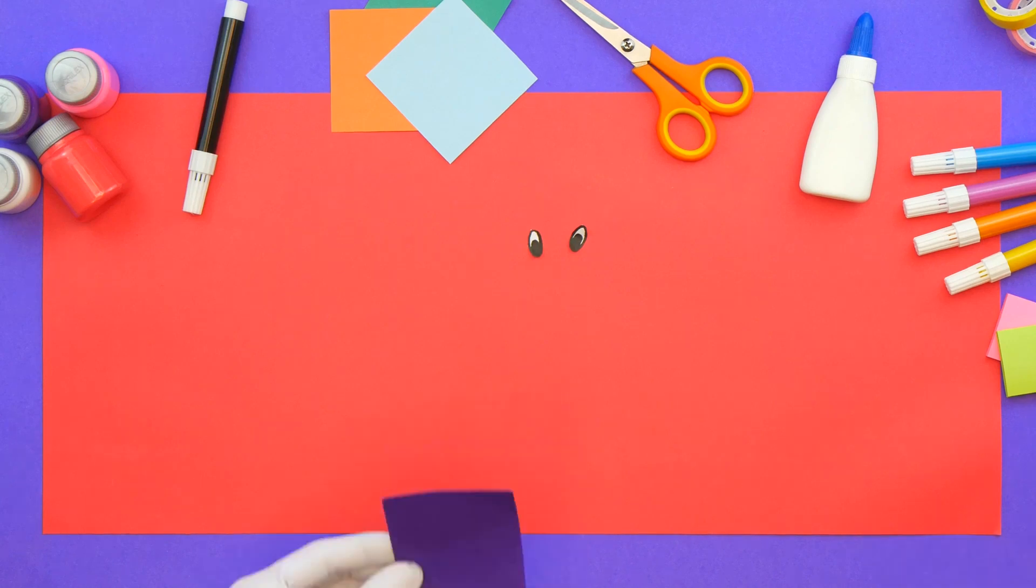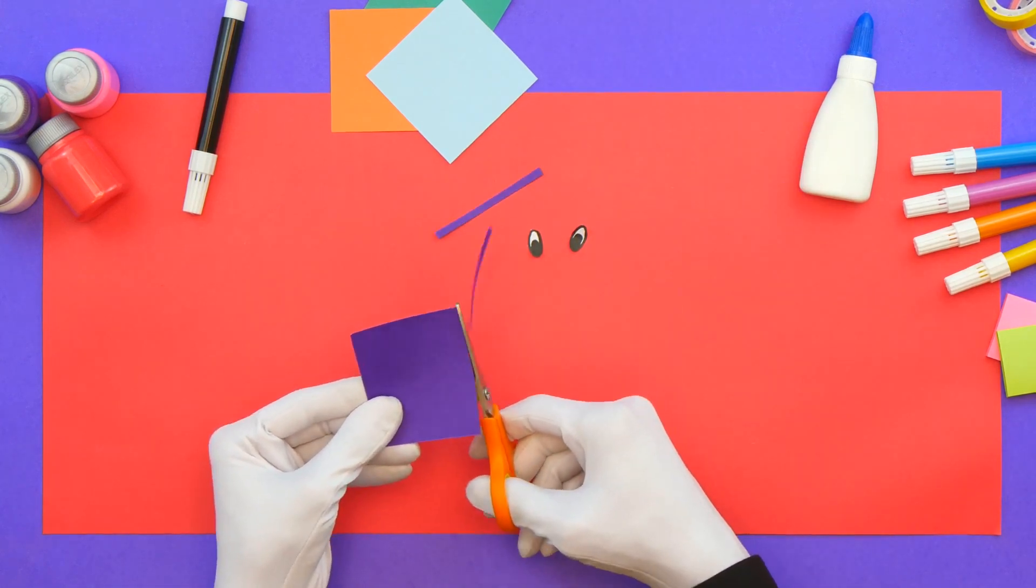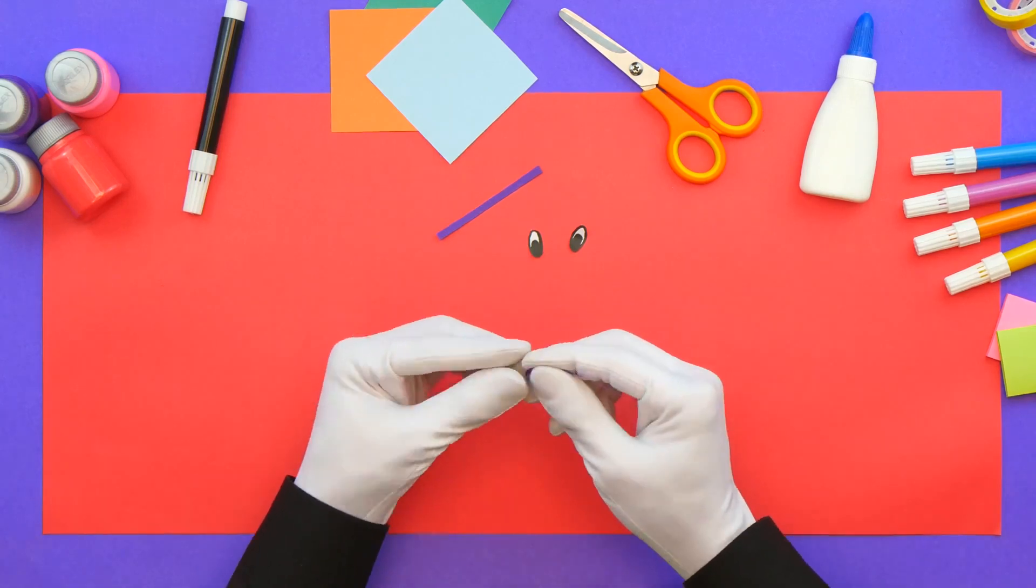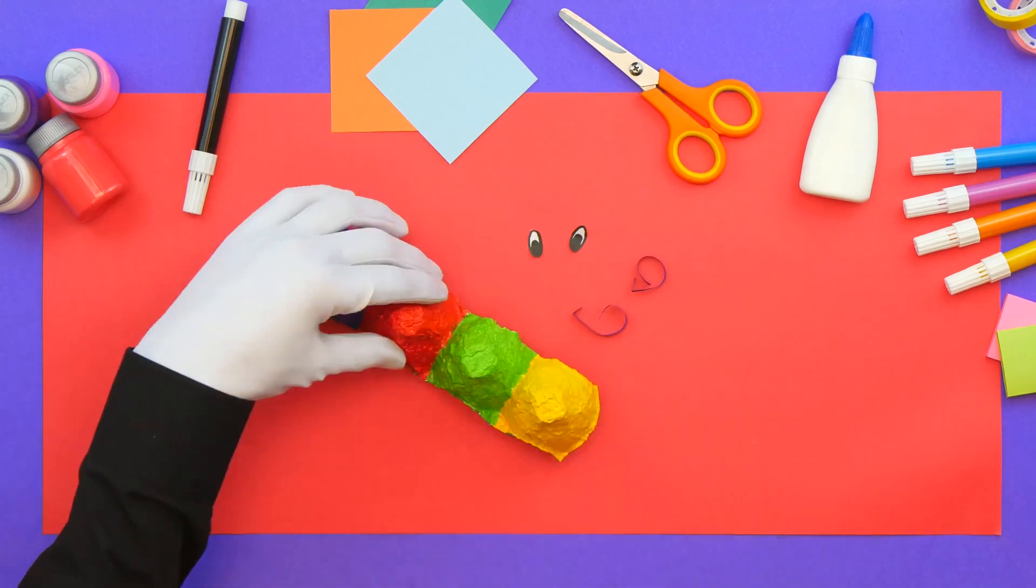After that, cut two stripes of colored paper and roll or twist them, this way, to make the antennas look funny. There we go.